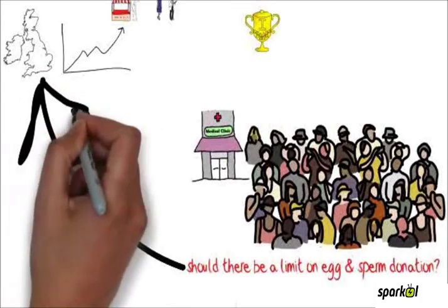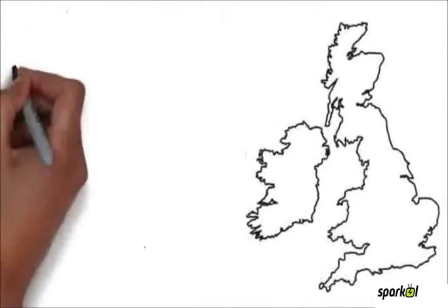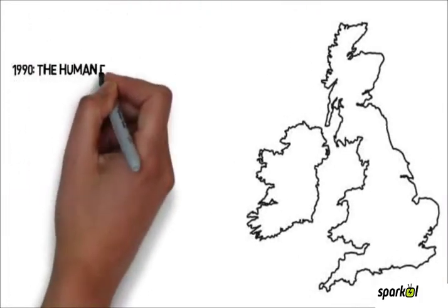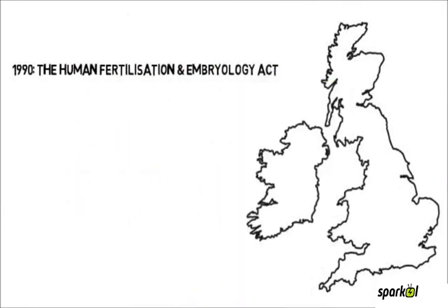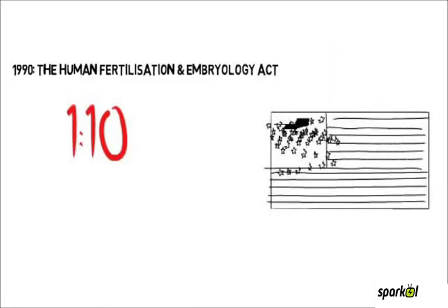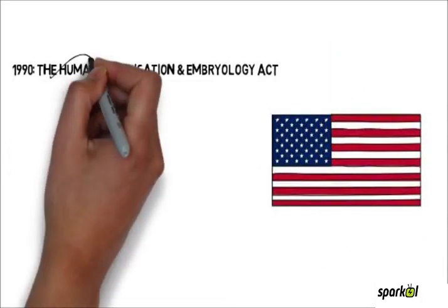Presently in the UK there are regulations in place to ensure a situation like the above does not occur again. In 1990 the Human Fertilisation and Embryology Act limited the number of children procreated from one sperm donor restricted to 10 families. However, in countries like the USA such restrictions have not yet been implemented.